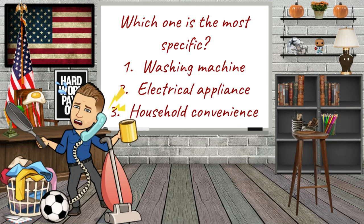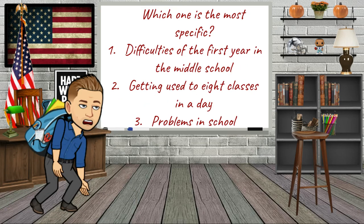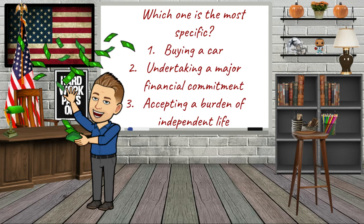How about now — which one is the most specific: washing machine, electrical appliance, or household convenience? Which one is the most specific: difficulties of the first year in middle school, getting used to eight classes in a day, or problems in school? Which one is the most specific: buying a car, undertaking a major financial commitment, or accepting a burden of independent life?